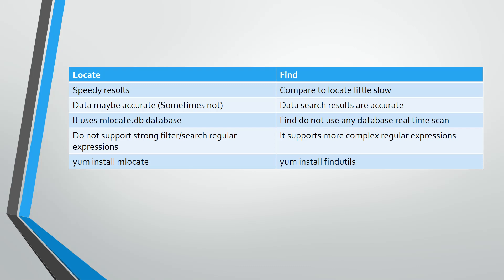To install the locate command, you need to install the mlocate package. The find command comes with the findutils RPM package. Both need to be installed on the system.